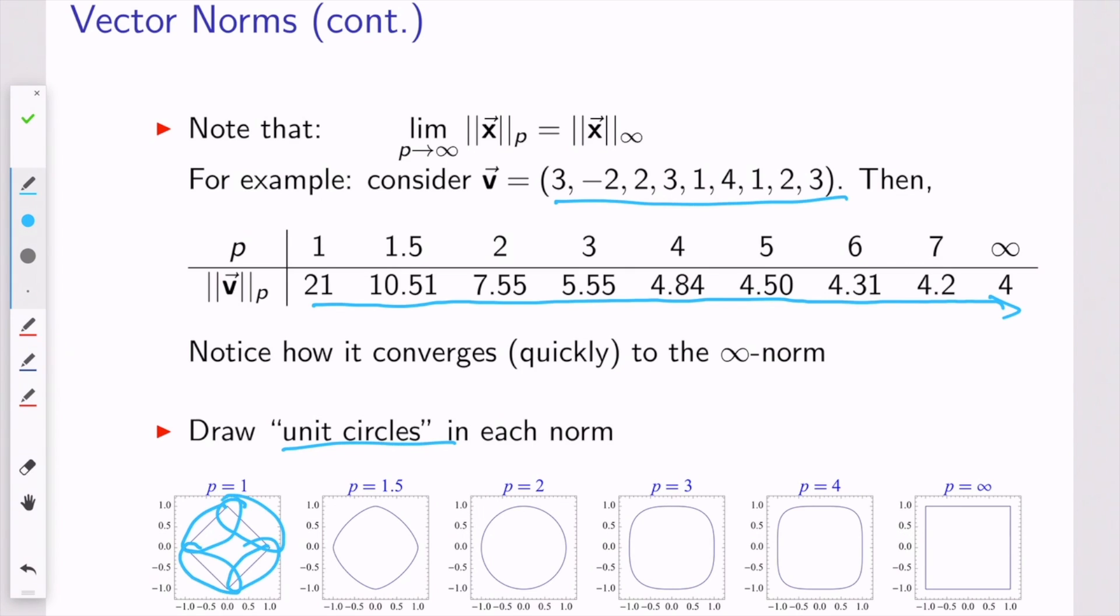Right, so that's the unit circle. You see the sequence of pictures as p goes on towards infinity, and the unit circle, so to speak, doesn't look like a circle at all. It looks like a square.